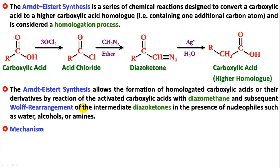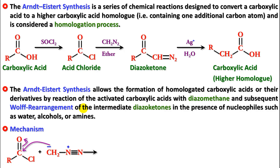Let's see the mechanism of this reaction. We start with the acid chloride; this is diazomethane, and this is one of the resonating structures of diazomethane. Carbon is nucleophilic — as we can see, it is going to attack the carbonyl carbon. The pi bond shifts to O, it comes back, and the Cl leaves — substitution nucleophilic — and we get this compound.